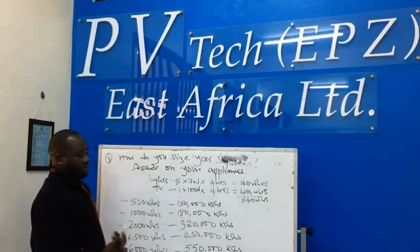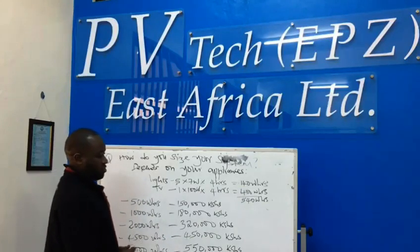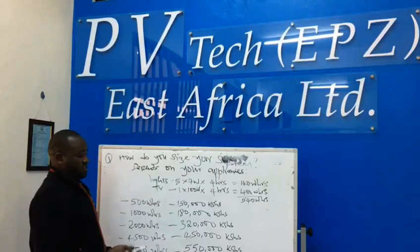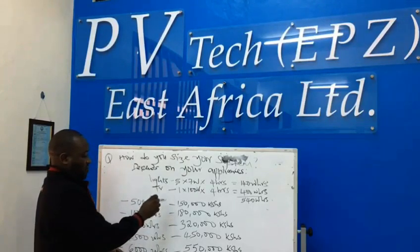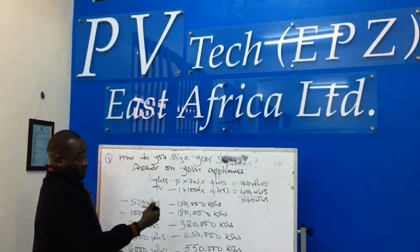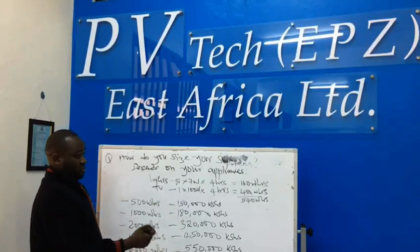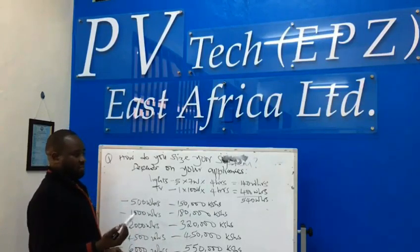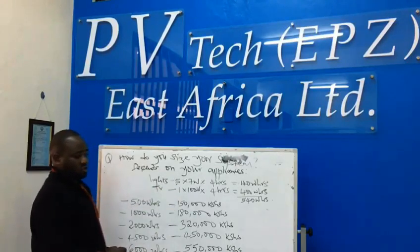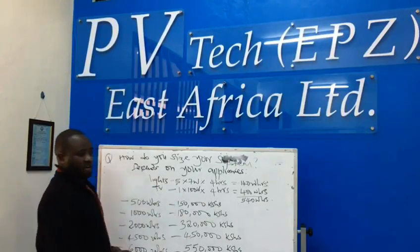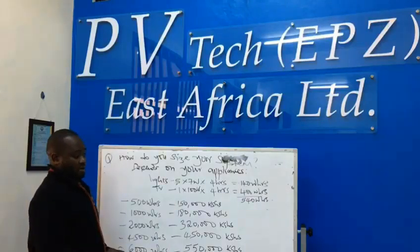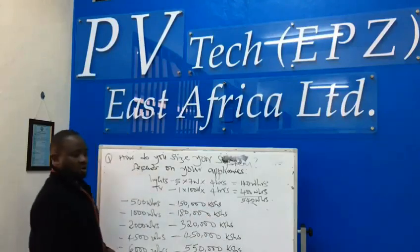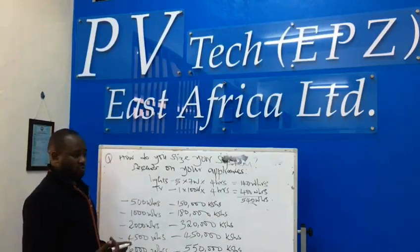What you'll get is the watt-hours. In this case, five multiplied by seven by four gives you 140 watt-hours. Then for another appliance like a TV — one TV at 100 watts used for four hours will consume 400 watt-hours per day. If you add the total watt-hours, you get something like 540 watt-hours.